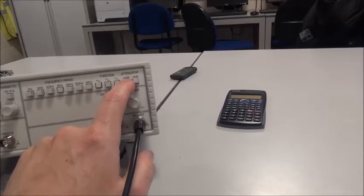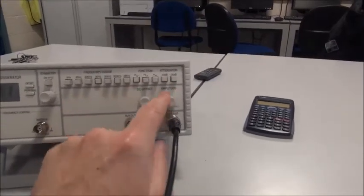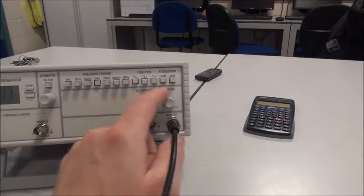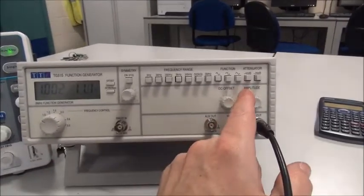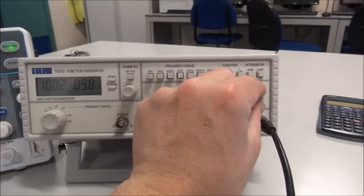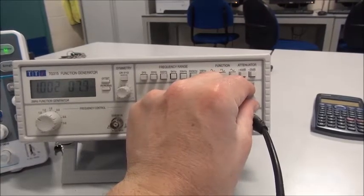Remember, the attenuator makes the signal smaller, and we adjust this dial here. Make sure the DC offset is on zero. We adjust this dial here until we get an output of 5 volts.